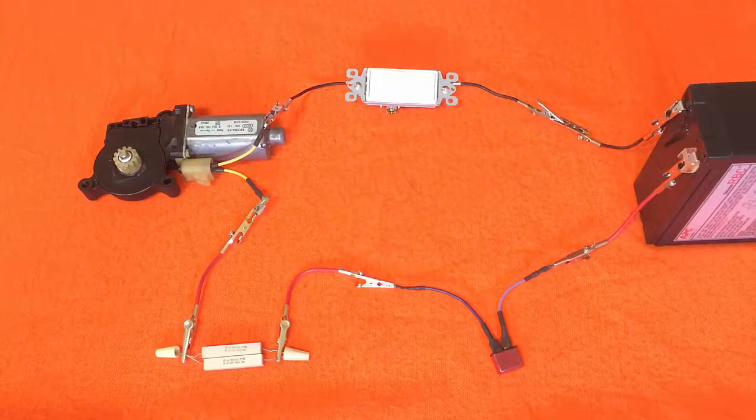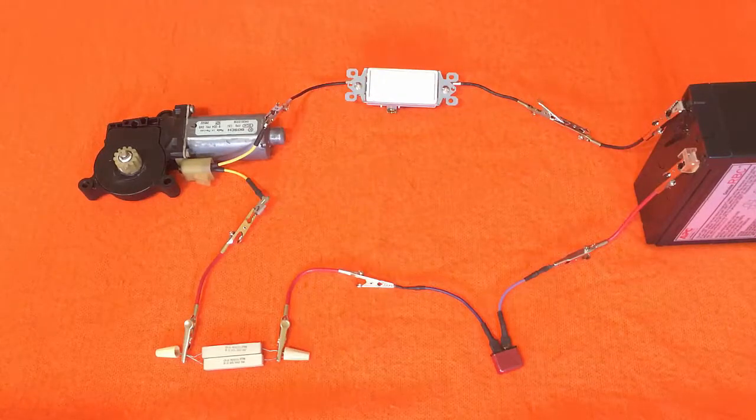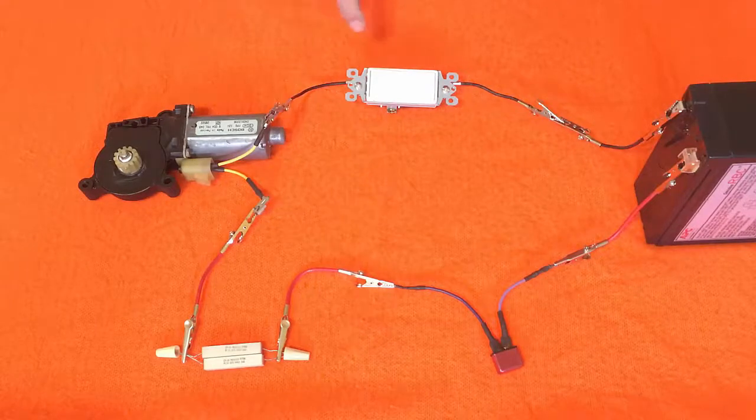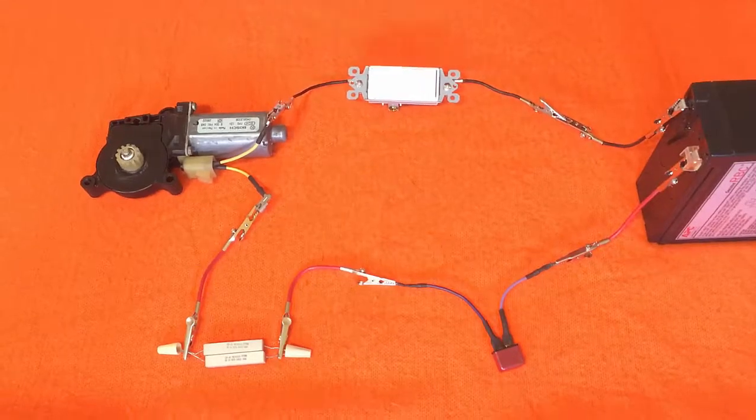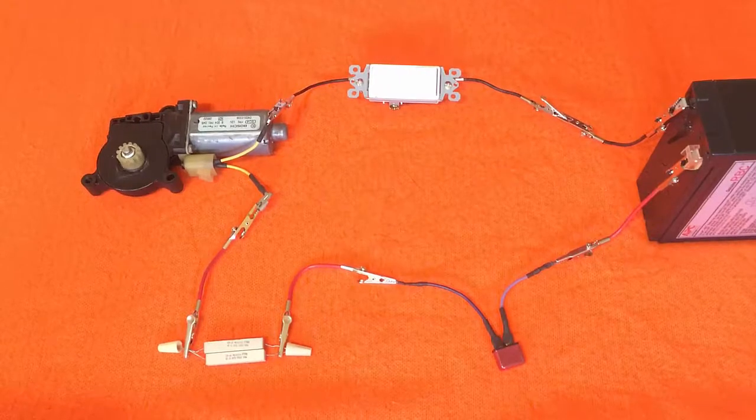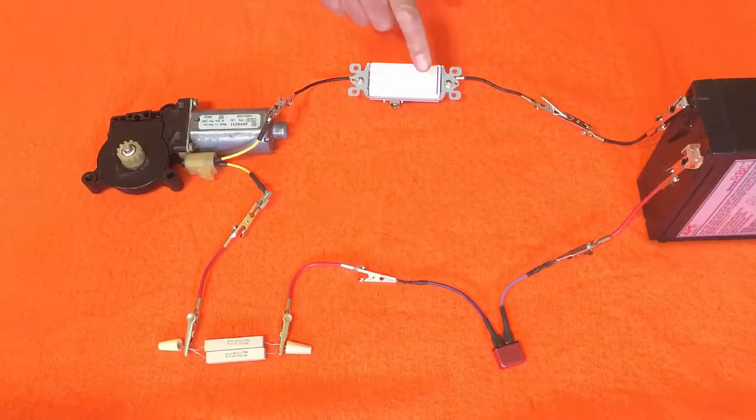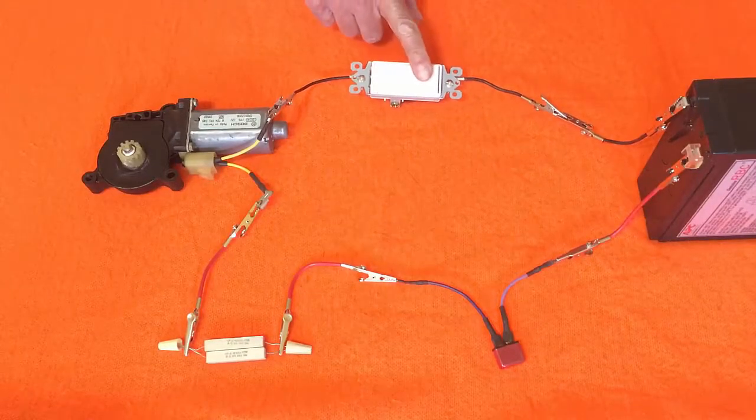Right now I have positive battery going to the bottom terminal and the top terminal on the motor is grounded. You can see that the motor is spinning clockwise. We'll just let it run a couple seconds and then I'll turn it off.